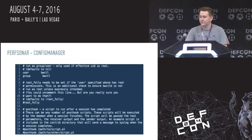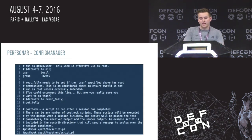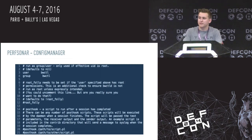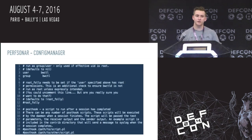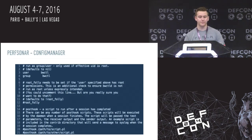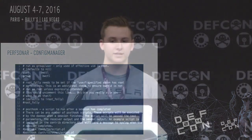Looking at the bandwidth control configuration, there's a user and group setting — so it drops privileges immediately after running — and then a post_hook parameter at the bottom. Similar to a git hook, after a successful bandwidth control test it executes the post hook. Since we can edit this config via the config manager, we can change the user and group so the application never drops privileges and runs as root, then point it to a post hook controlled by our Apache user. That way, when we trigger a successful test, it's going to trigger our post hook as root.